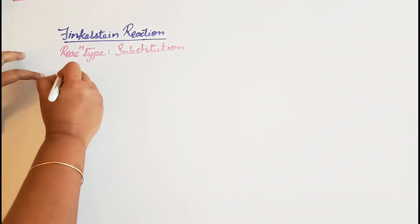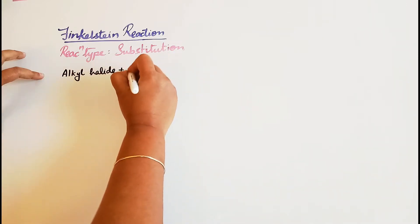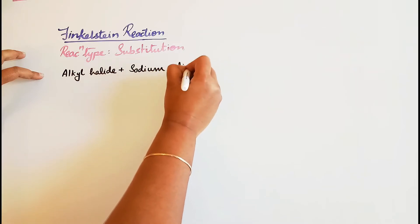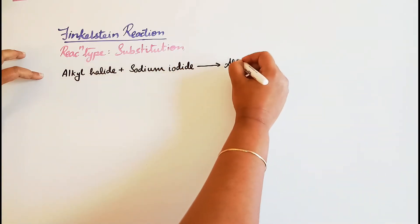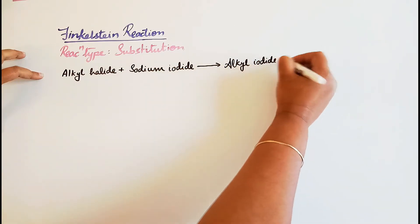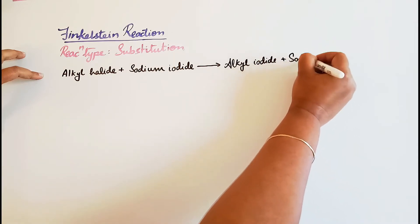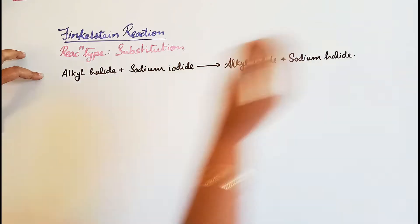In this reaction, an alkyl halide reacts with sodium iodide to form alkyl iodide plus sodium halide. This is one of the reactions for the synthesis of an alkyl halide, specifically an alkyl iodide.